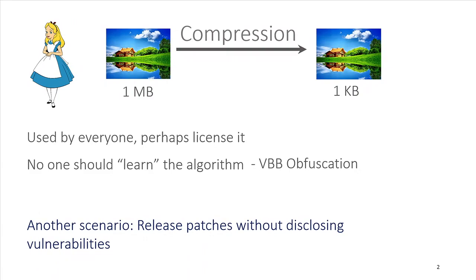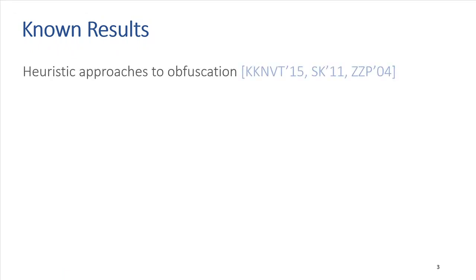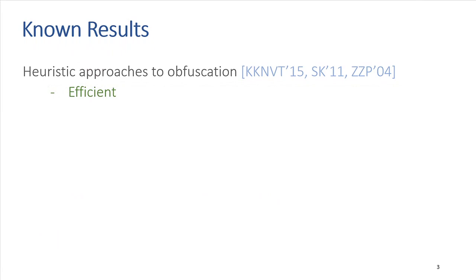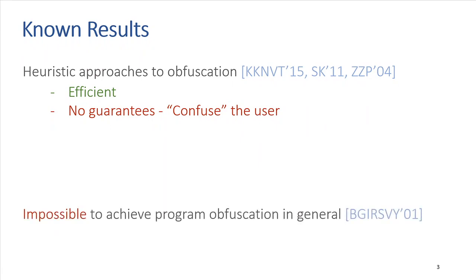In order to solve the problem of obfuscation, there have been multiple results. There are heuristic approaches — if you look at obfuscated code, you may not know what it does immediately, but given enough time you would. Such approaches are efficient but provide no guarantees. At the other end of the spectrum, there are results showing it is impossible to achieve obfuscation in general.